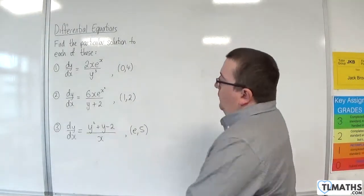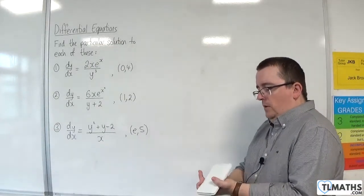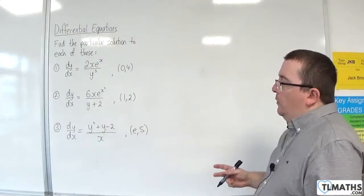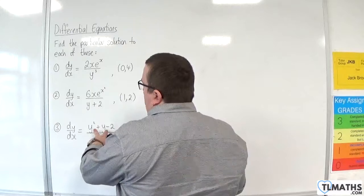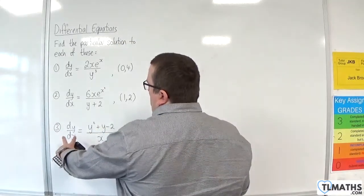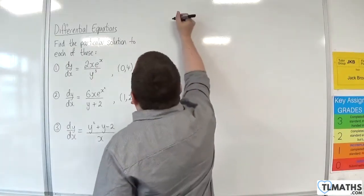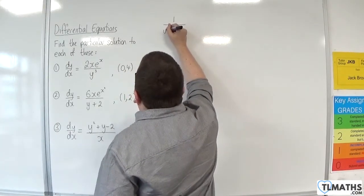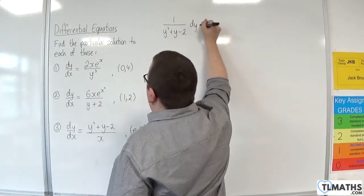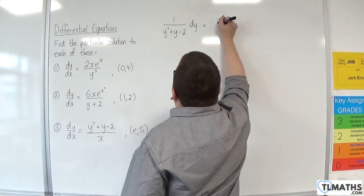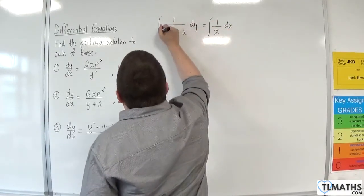Number 3: dy by dx is equal to y squared plus y, take away 2, over x. So I need to get all the x's onto the right-hand side and all the y's onto the left-hand side. I'm going to divide both sides by y squared plus y minus 2 and multiply both sides by dx. So I get 1 over y squared plus y minus 2 dy is equal to 1 over x dx, and then we put in our integral signs.